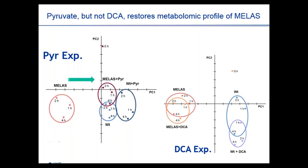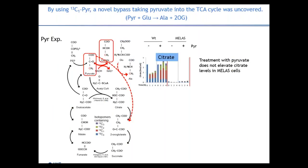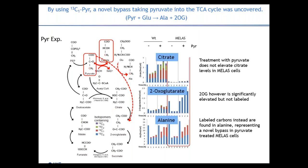Using PCA analysis and steady-state metabolomics, when the MELAS cells were treated with pyruvate, their metabolic profile shifted closer to that of wild-type cells. However, in DCA-treated cells, the metabolic profile remained similar to disease cells and very different from wild-type. Using C-13 labeled pyruvate, the authors showed that the added pyruvate was not converted directly into citrate in the MELAS cells, but instead the label was detected in alanine, along with an increase in unlabeled 2-oxoglutarate, suggesting that alanine transaminase was activated with pyruvate treatment. 2-oxoglutarate can then stimulate the TCA, possibly alleviating many MELAS symptoms that simply removing lactate cannot.